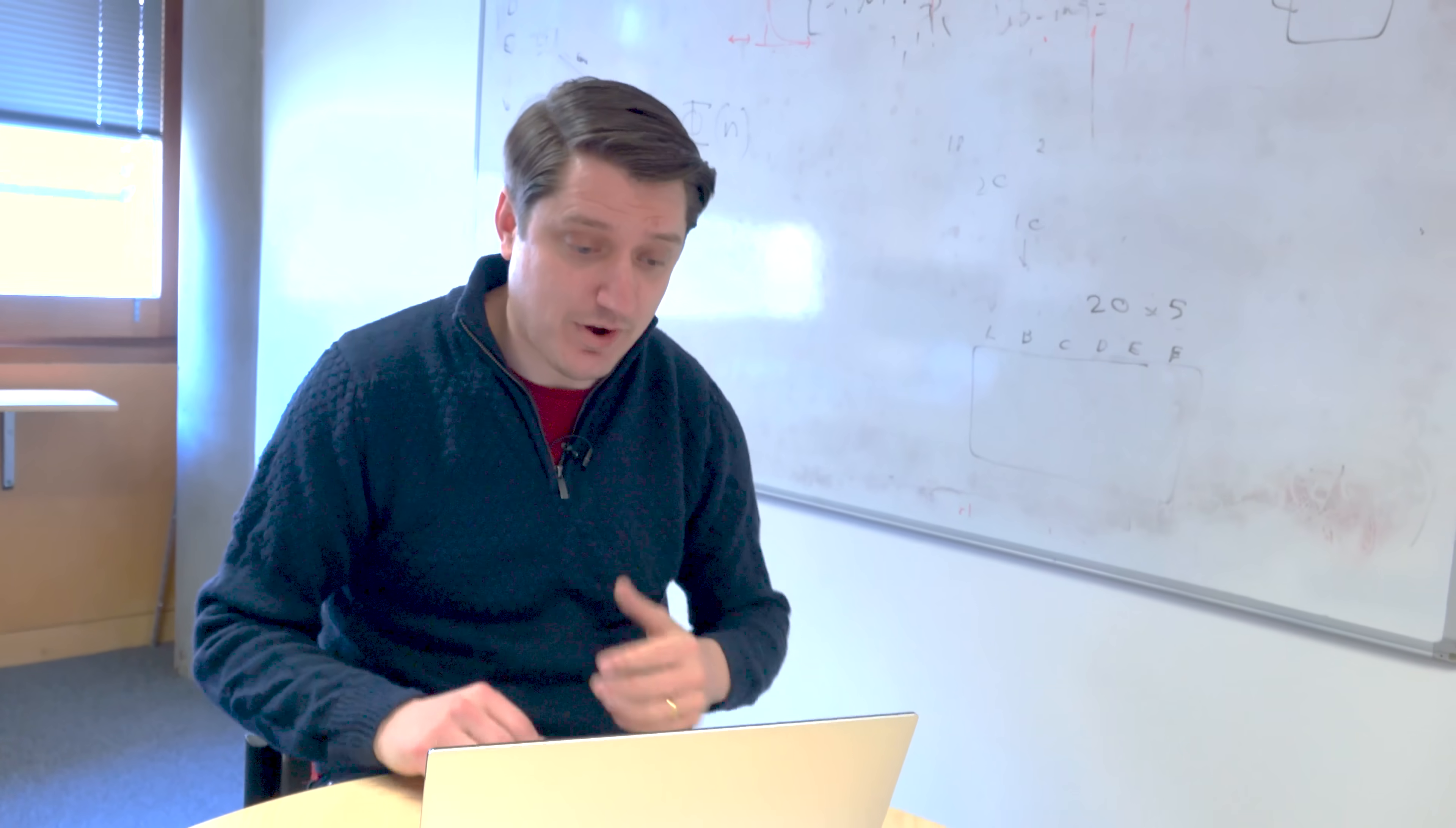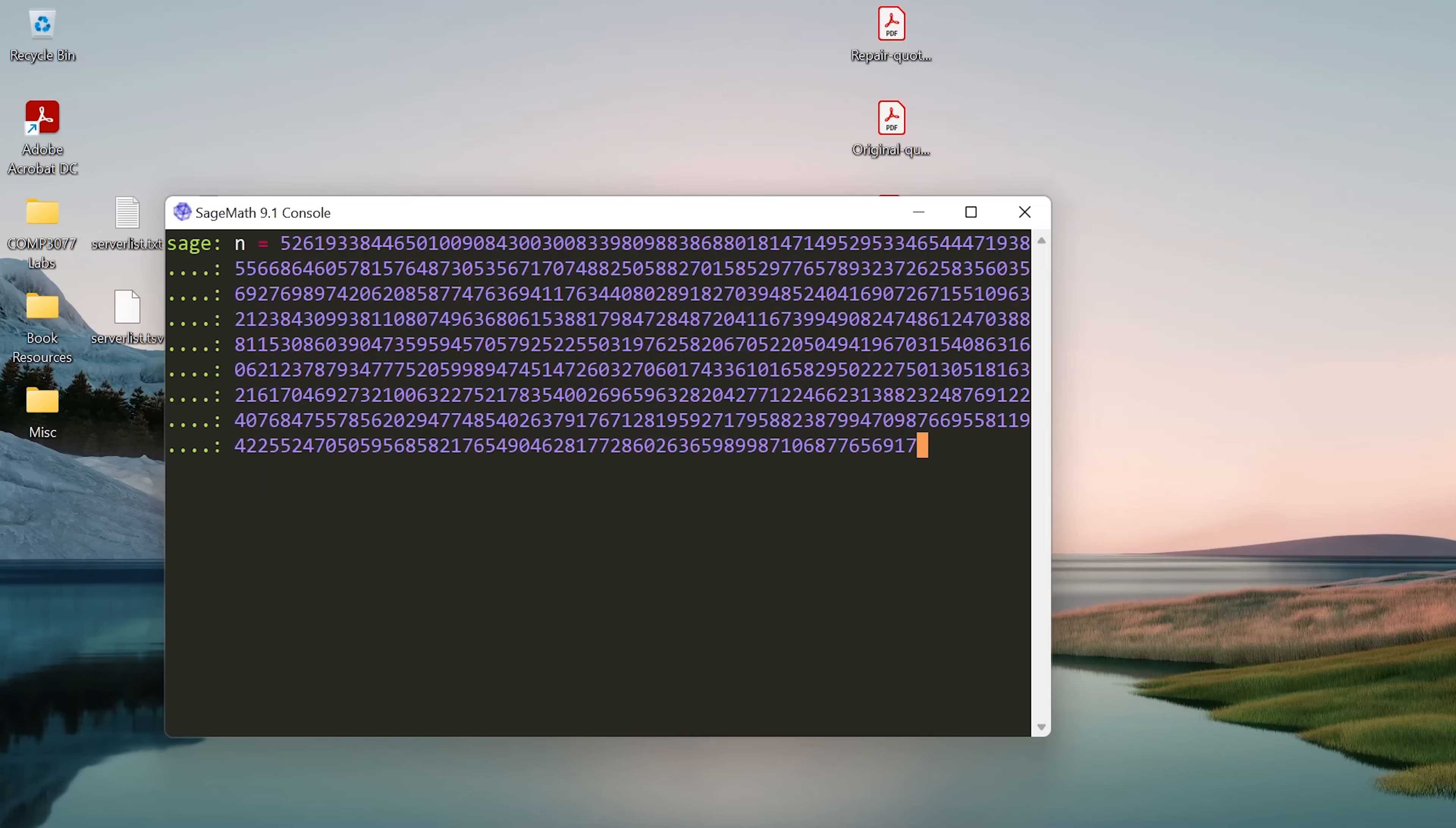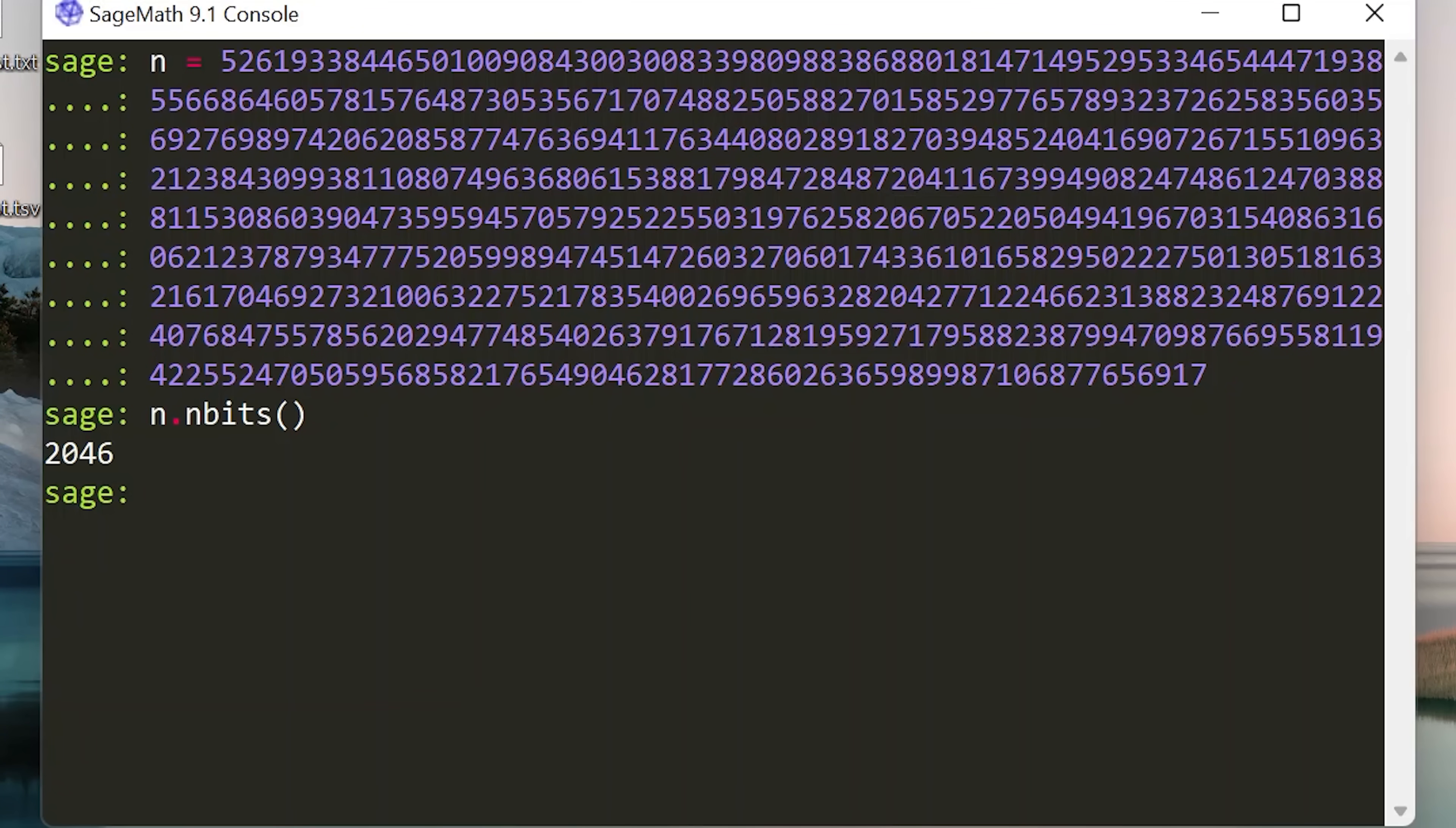Now, what I've done is I've got a weak N, right? So what I did was I picked two random primes that were not that different, and I multiplied them together and got an N, and I've forgotten what the primes are and deleted them, right? So N equals, and I'm going to paste it in, and it's a very, very large number. I don't know how many digits it is, but some number of digits is quite big. I can go N dot N bits is 2046. So it's actually marginally smaller than 2048, but it's not bad, right?